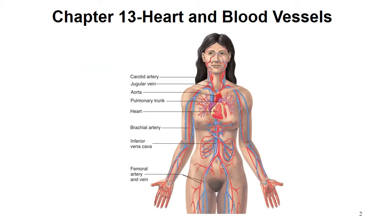Chapter 13 is the heart and blood vessels. This is just a brief overview showing a woman, her heart in the center of her body, and blood vessels. Blood vessels carry blood either towards the heart or away from the heart — they transport the blood. The heart will pump the blood, and the respiratory system will help make that blood oxygen rich or oxygen poor.